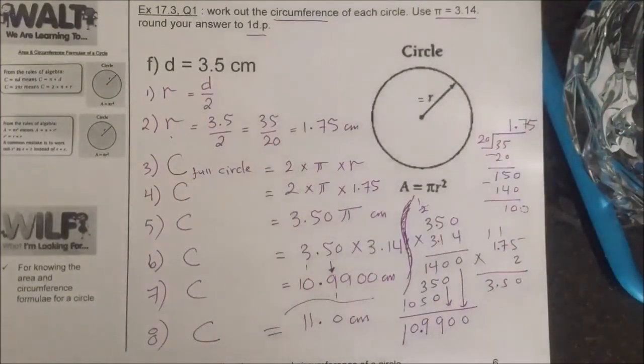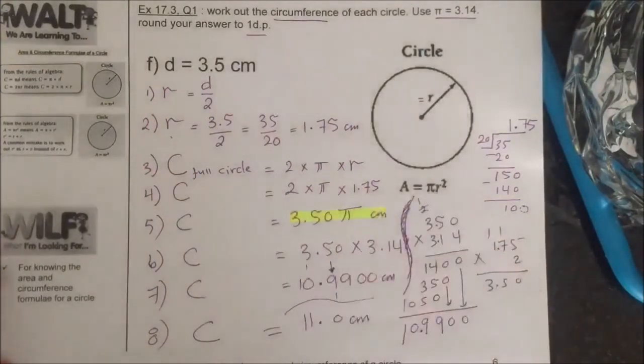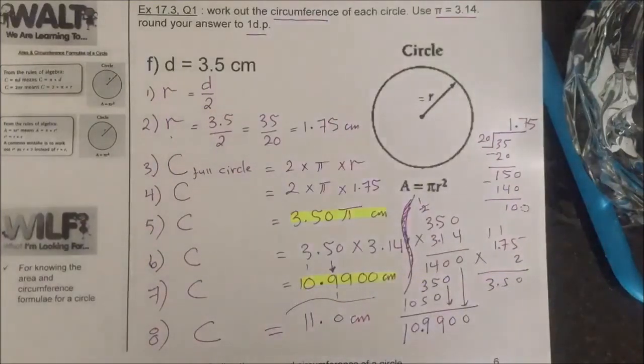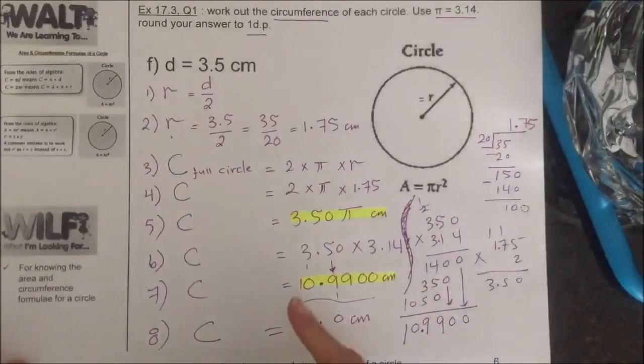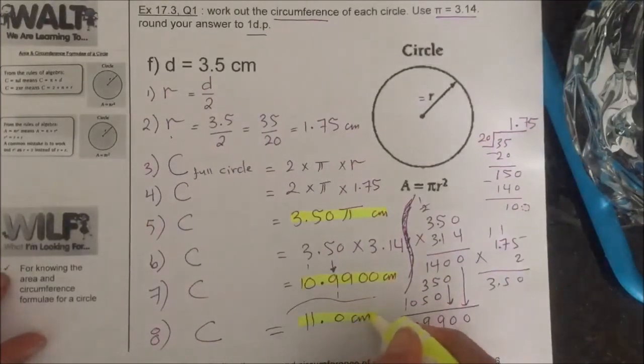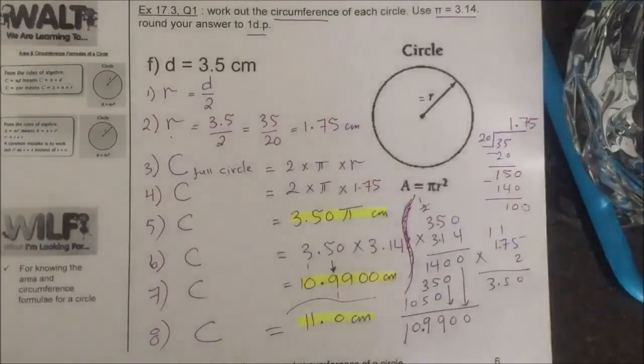So my answer in terms of pi is 3.50 pi centimeter. The answer after I insert pi as 3.14 and I proceed with my calculation is 10.99. And round it to one decimal place is 11.0. And remember that the measurement unit for circumference is centimeter, not centimeter squared, because it's the length of the arc. Thank you.